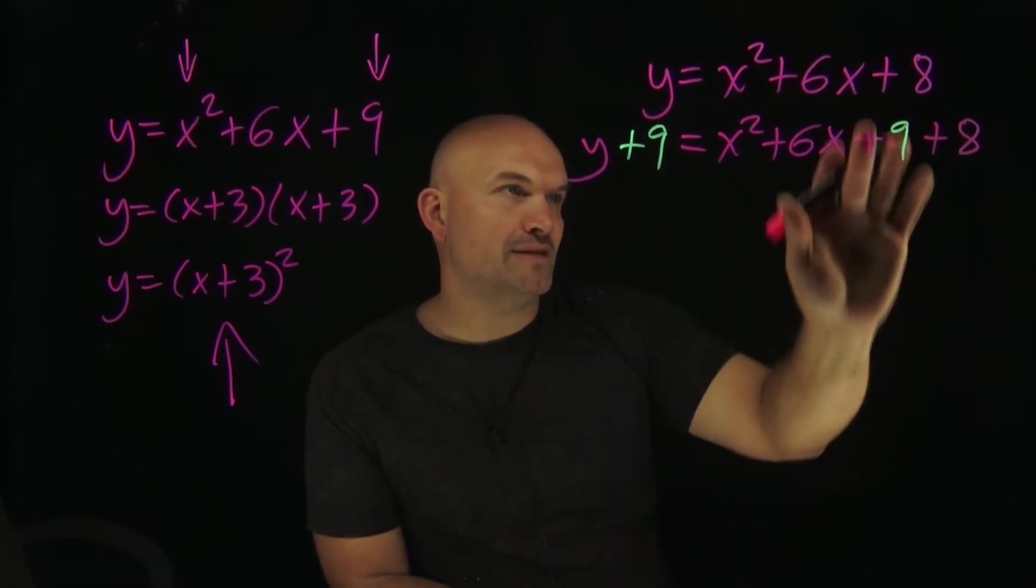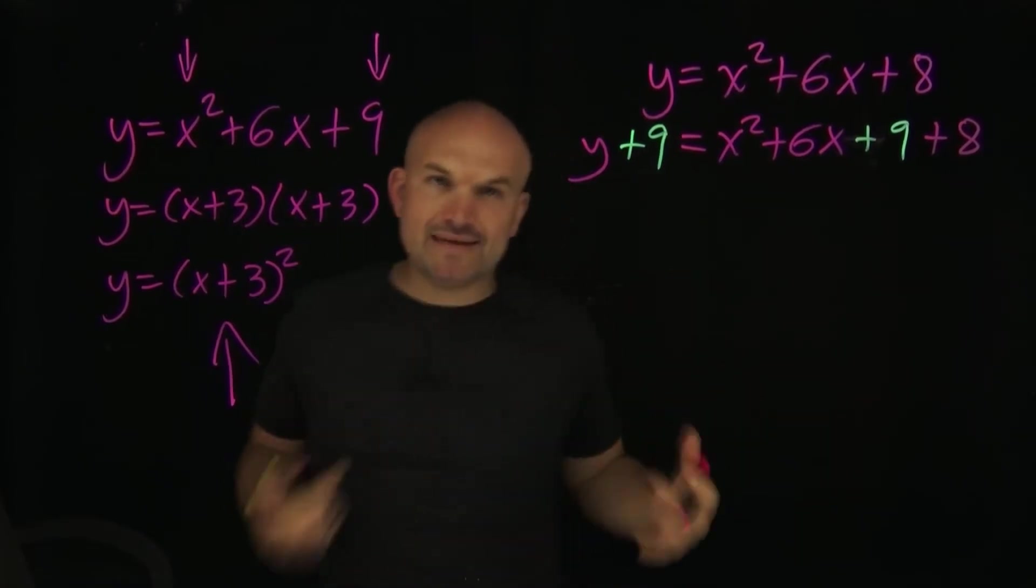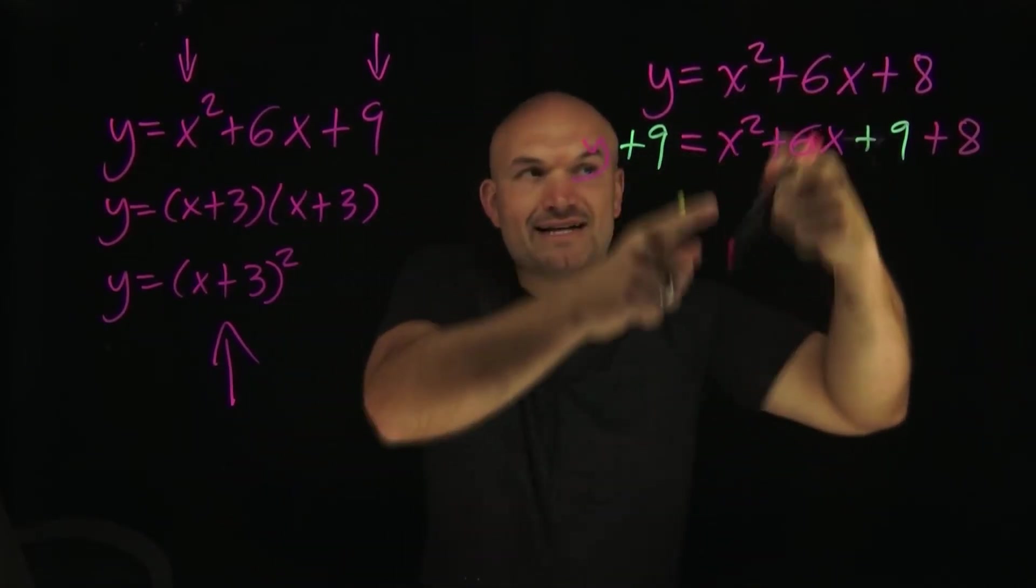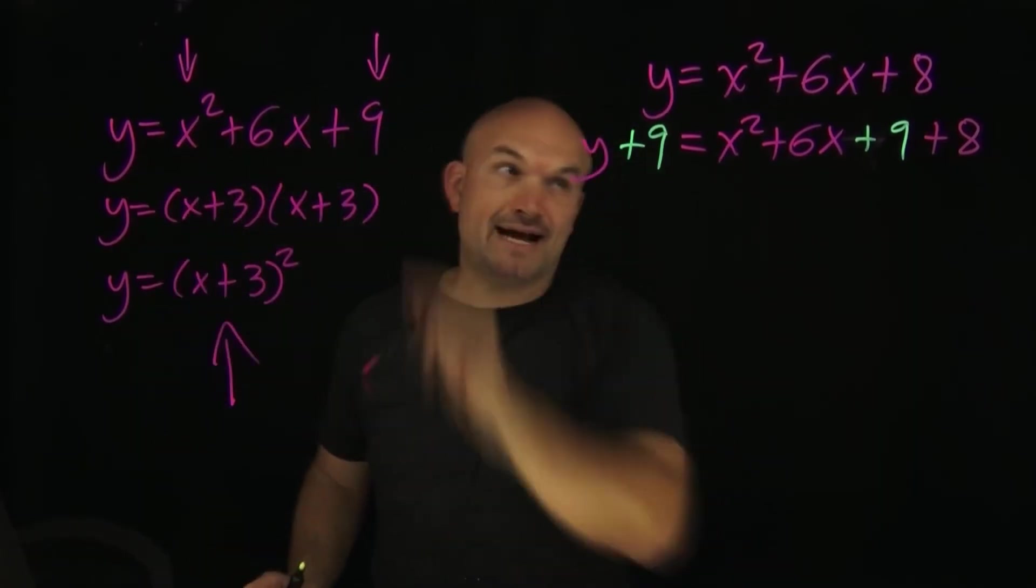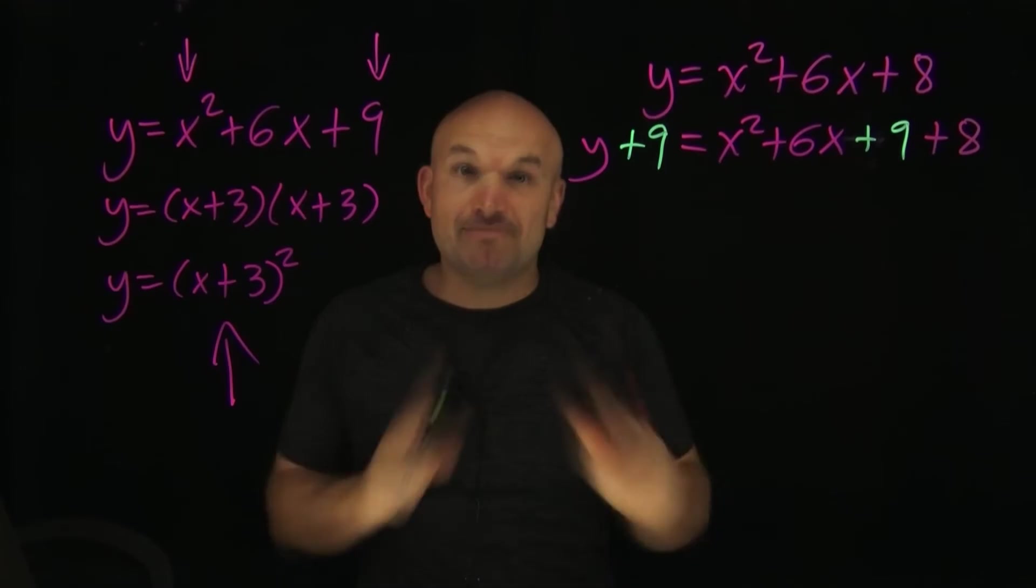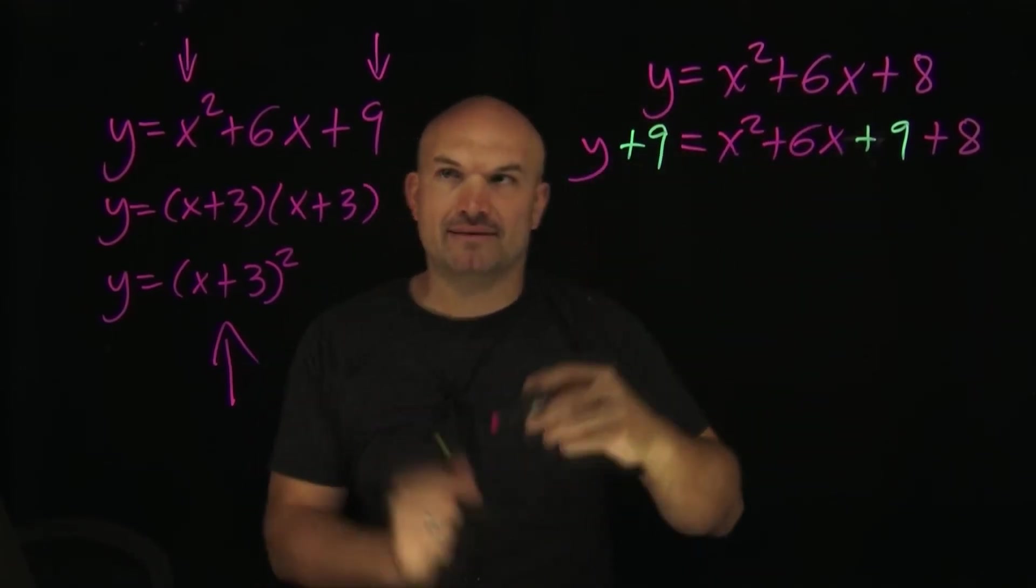Now what we did is we knew if we had an x² plus a 6x, we knew the number that was going to create that perfect square trinomial was a 9, so I just added that 9 in there. Kind of like some math magic, but it's okay because I added a 9 onto both sides.